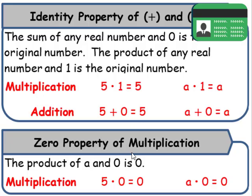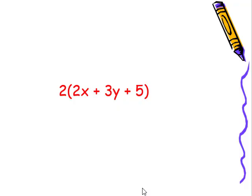And the zero property of multiplication, everyone should know that one. Remember, anytime you're multiplying by zero, you just get zero. Let's distribute. So let's see if you can distribute these before I begin.